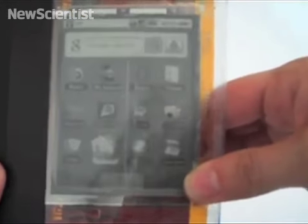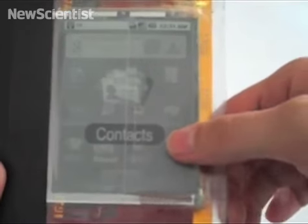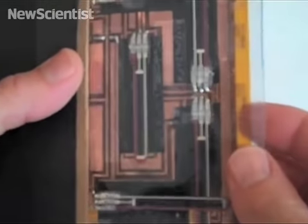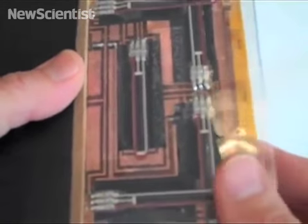The display we used is a flexible version of e-ink. A flexible printed circuit with resistive bend sensors is used to detect the bending of the display.